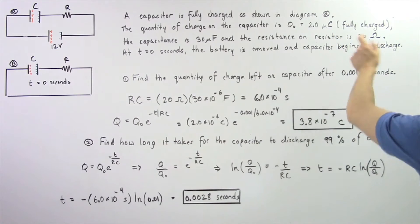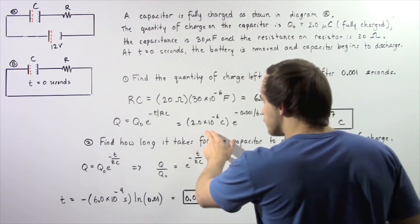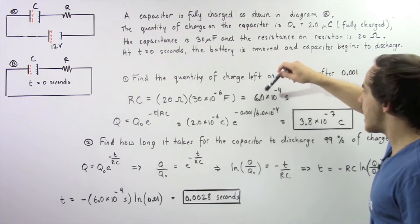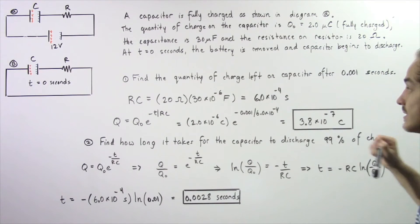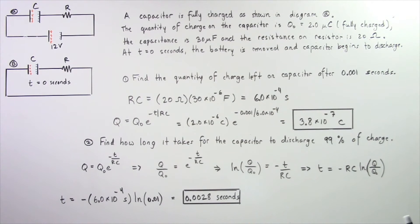We know that Q naught is equal to 2 microcoulombs or equivalently 2 times 10 to the negative 6 coulombs. We know that the product RC, our time constant, is 6 times 10 to the negative 4 seconds and T is given to be 0.001 seconds. So we plug those values into our equation and we get a charge of about 3.8 times 10 to the negative 7 coulombs. This is the quantity of charge that is left on our capacitor after 0.001 seconds.